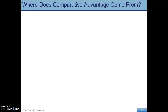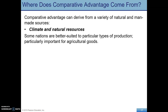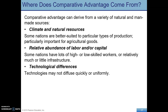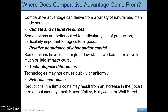What causes comparative advantage? Many things: climate and natural resources — Japan is an island with few natural resources, giving it different comparative advantages than the large, resource-diverse United States. Also the relative abundance of capital and labor, high-skill versus low-skill workers, infrastructure levels, technological differences, and external economies — for example, a tech firm in Silicon Valley benefits from very different external economies than one in another region or country.